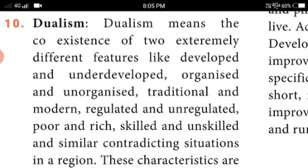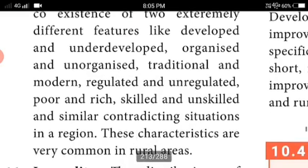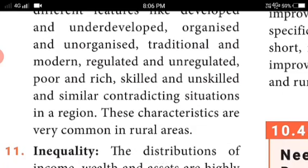Dualism: dualism means the coexistence of two extremely different features — like developed and underdeveloped, organized and unorganized, traditional and modern, regulated and unregulated, skilled and unskilled — and similar contradictory situations in a region. These characteristics are common in rural areas. We cannot clearly say whether rural areas are developed or underdeveloped, organized or unorganized — they exist in the midst of these contradictions.